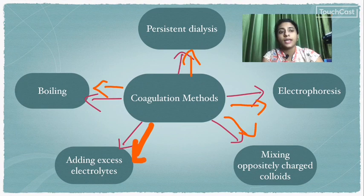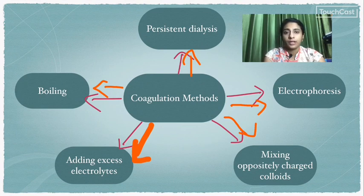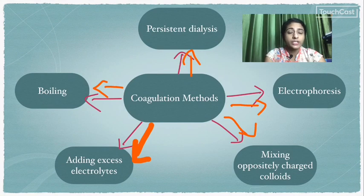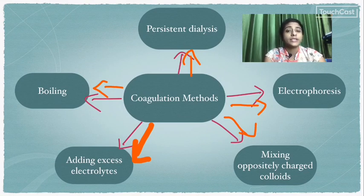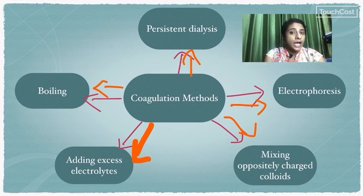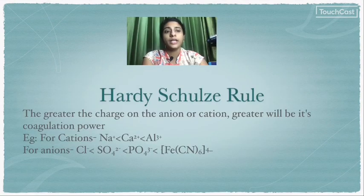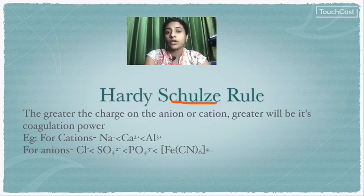Another method is adding excess electrolytes. When excess electrolytes are added, the opposite charge ions neutralize the charged colloidal particles, causing precipitation. This process follows the Hardy-Schulze rule: the greater the charge on the cation or anion, the greater will be its coagulating power.